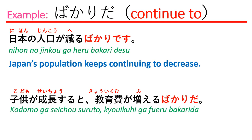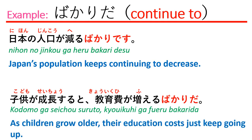Next example: 子どもが成長すると、教育費が増えるばかりだ。 Which means: as children grow older, the education costs just keep going up.